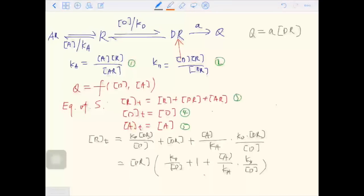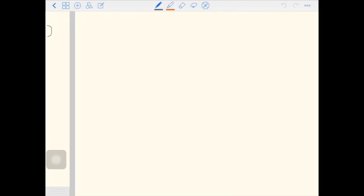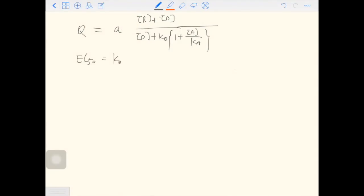And you can do the rearrangement to move DR to the left and everything else to the right. So this is some basic algebra, and you can do it by yourself. I'm not going to waste time here. So in the end, you have the form of Q equals A times Rt D over D plus Kd times 1 plus A over Ka. So EC50 is Kd times 1 plus A over Ka. If you write the equation in this form, you are considering D, the independent variable.